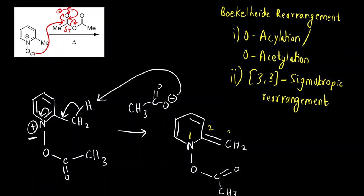Now, here you can see we can number this 1, 2, 3, and 1, 2, 3. So, [3,3]-sigmatropic shift can take place. This oxygen will form bond with this CH2. This pi bond will come here and this bond between 1 and 1 breaks.